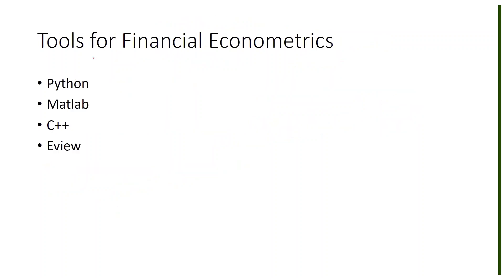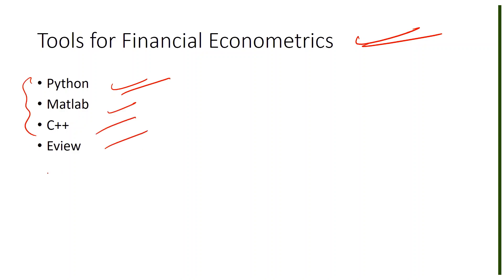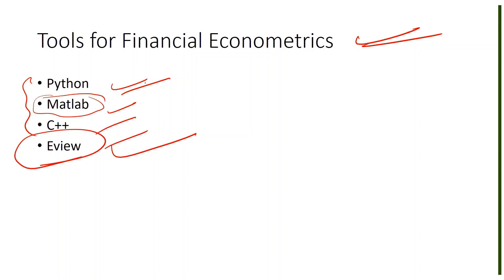Some of the tools you can use in financial econometrics are Python, MATLAB, C++, EViews — EViews is used more in academia and is not open source — and R. Python, R, and others are open source. These are some of the tools you can use for financial econometrics research.